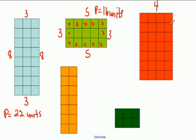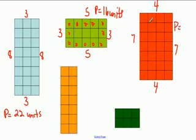This shape has four units on two sides and seven units on the other two sides. So the perimeter is four plus seven plus four plus seven, which equals twenty-two units.